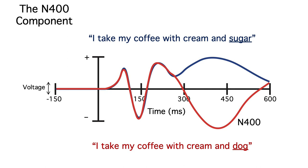But is this a bigger N400 for 'dog,' or a bigger P3 for 'sugar'? We know from a mountain of research that it's actually a bigger N400 for 'dog,' but you wouldn't be able to tell this from the data shown here. So when you read an ERP paper and they say they're measuring some particular component, you need to think about whether they might actually be picking up on a different component that represents a very different neurocognitive process.